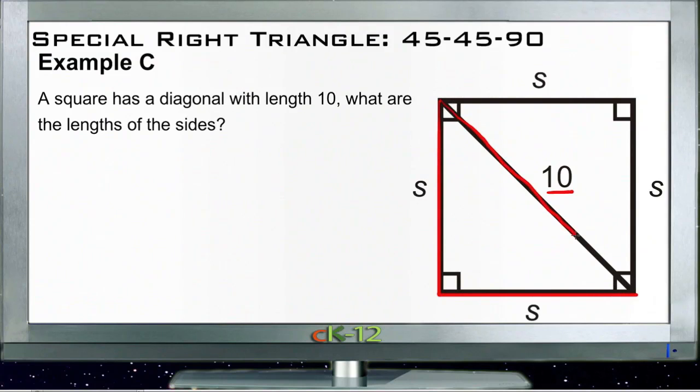So since we have x, x, and x roots of 2, in order to find out what one of these two other sides is, we just have to take the dimension we have and divide it by the root of 2. Right? So we have 10 divided by the square root of 2.